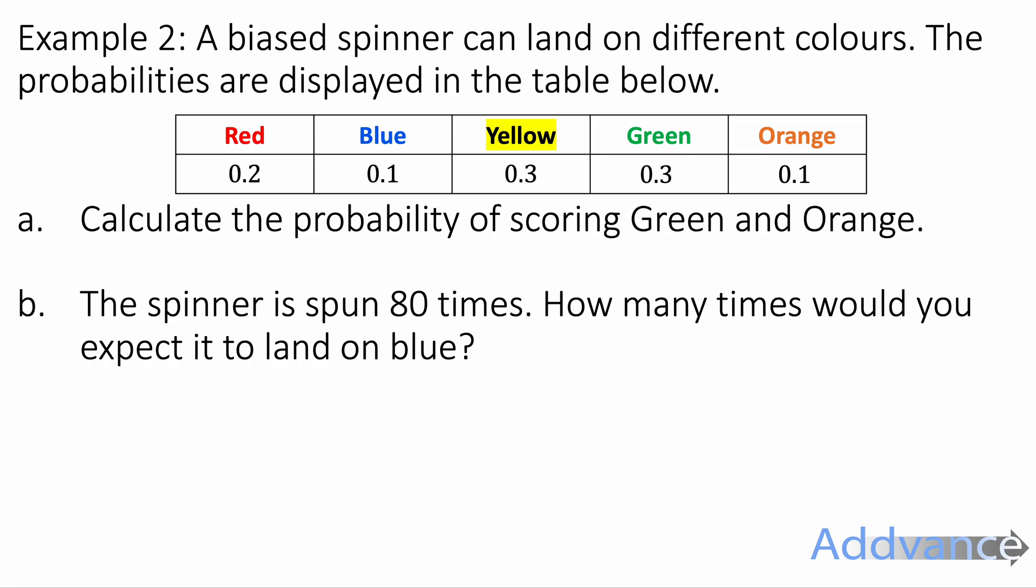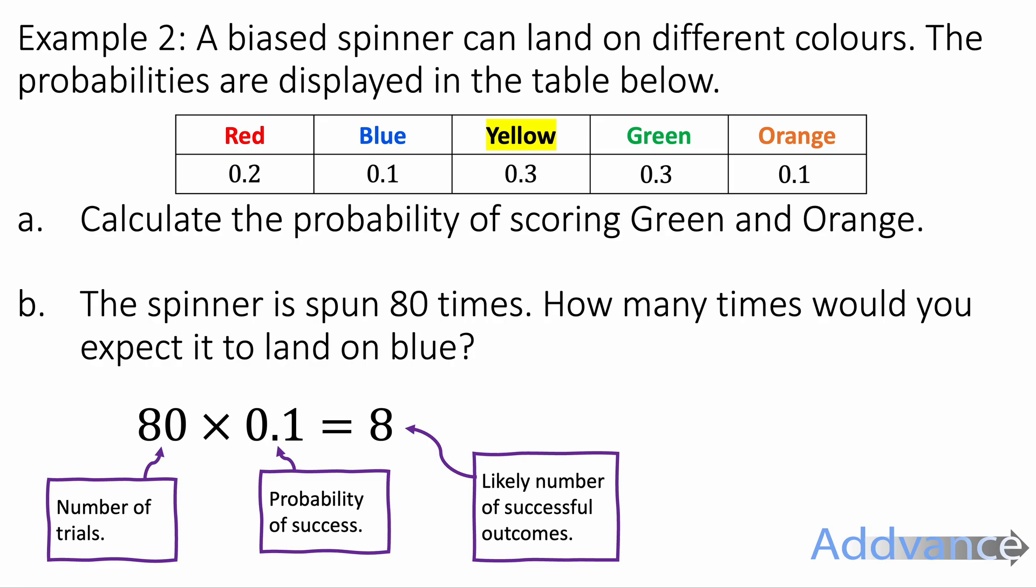The spinner is spun 80 times. How many times would you expect it to land on blue? We're going to do 80 times 0.1. That's the same as 8. 80 times 0.1 is 8. That is the number of times we spin times the probability of success gives us a likely number of successful outcomes. That's a really important equation in maths. The number of trials, the number of times you attempt it, times the probability of success gives you a good estimate of the number of times it's likely to happen.